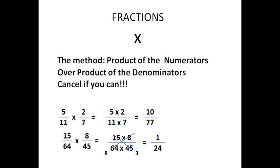After cancellation, one times three gives three, and our final answer is one over twenty-four. You might wonder: if the final answer were, say, three on top and no number on the bottom, you could put a one — but three over one is just three. So you don't need to worry when the one is on the bottom or everything has been canceled.